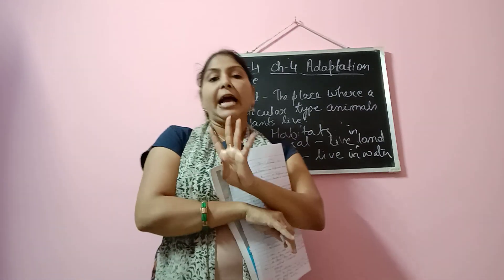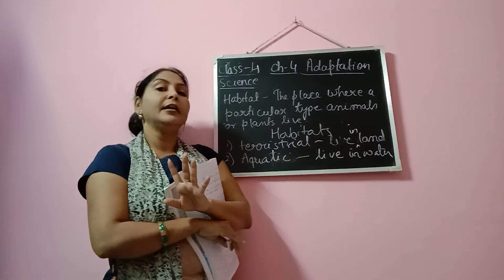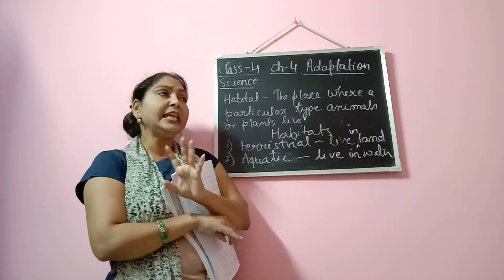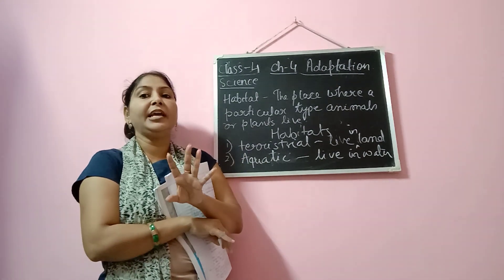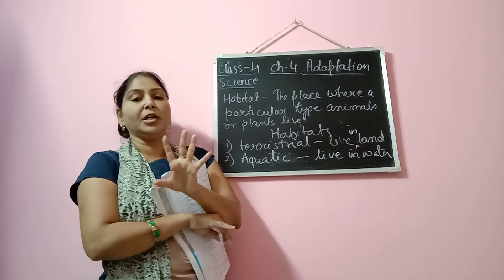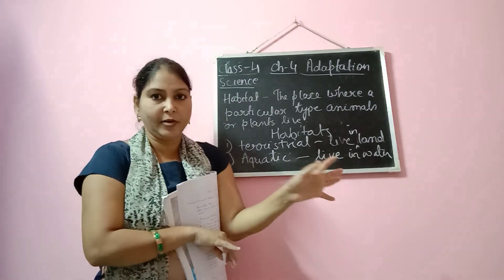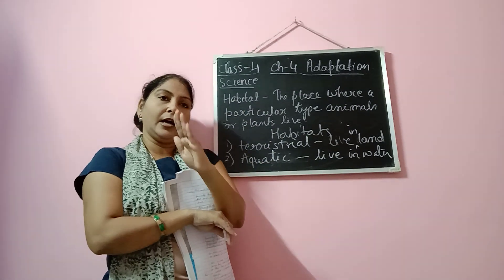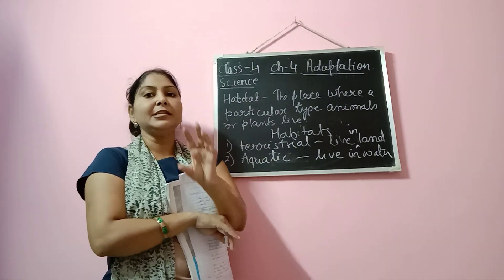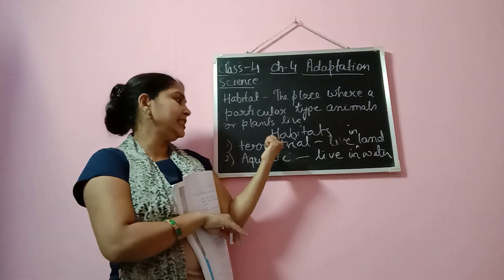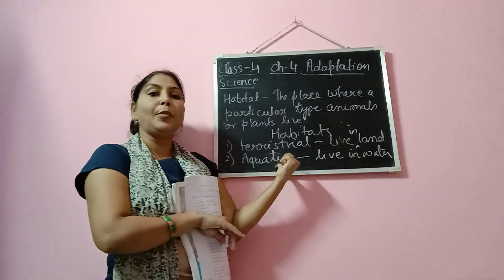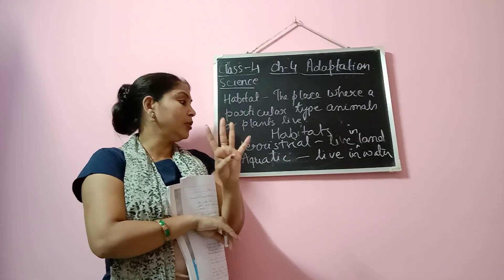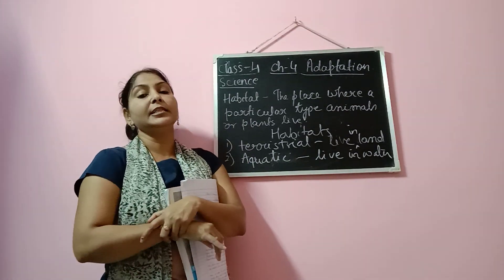And the fourth type of animals based on their habitat — they are aerial animals. Under aerial animals we have all the birds, because they spend most of their time in the air. So on the basis of habitat, animals have been grouped under four categories: terrestrial animals, aquatic animals, amphibians, and aerial animals.